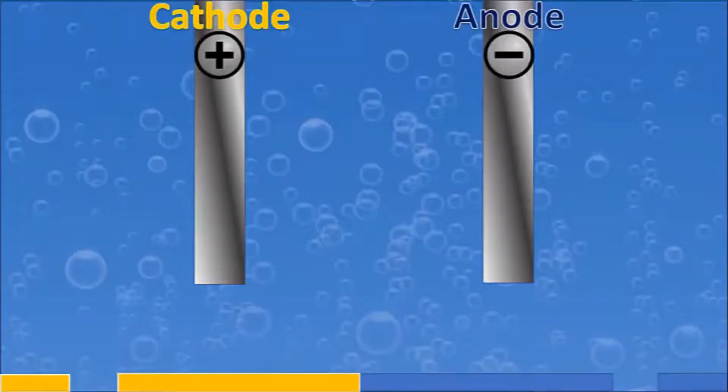We have an anode and a cathode. This is kind of reversed if we're using batteries, but in this, because we are using alternating current, it's cathode and anode, and anode is the minus. So as we run our water through our machines, the H2O...